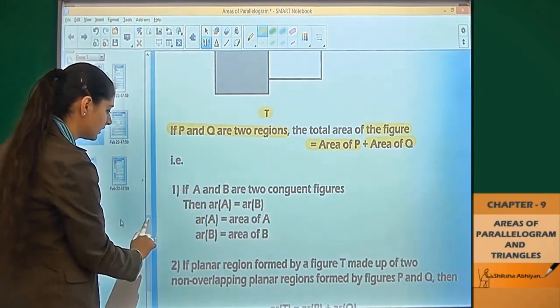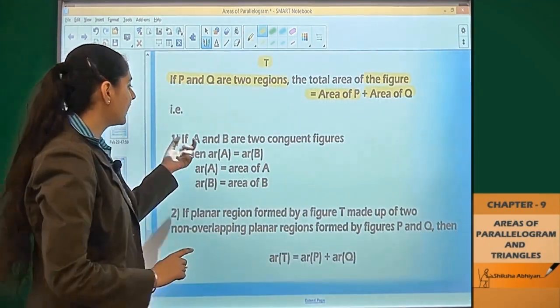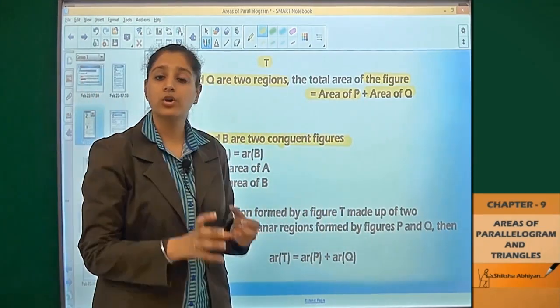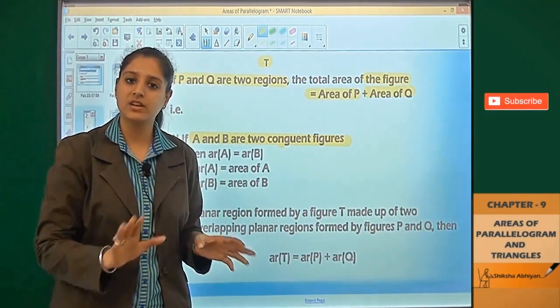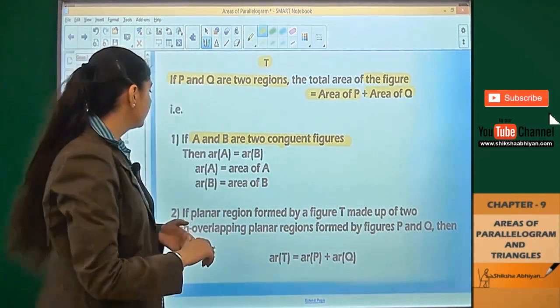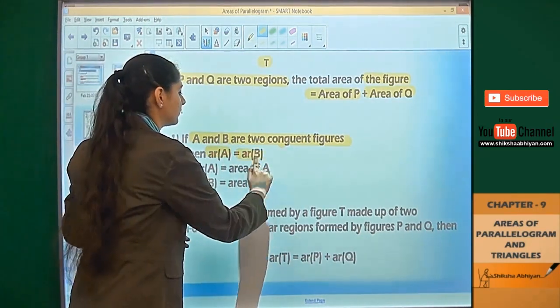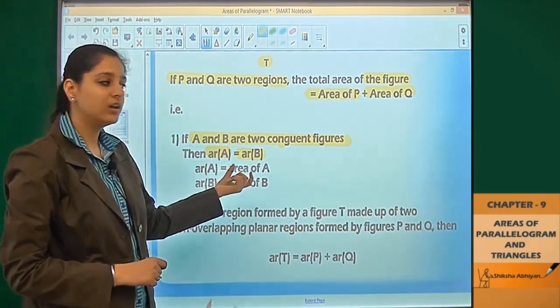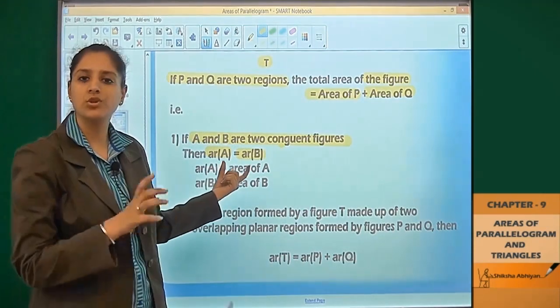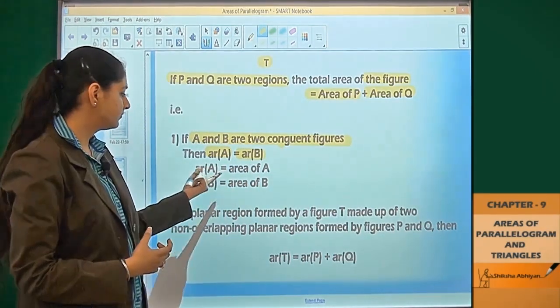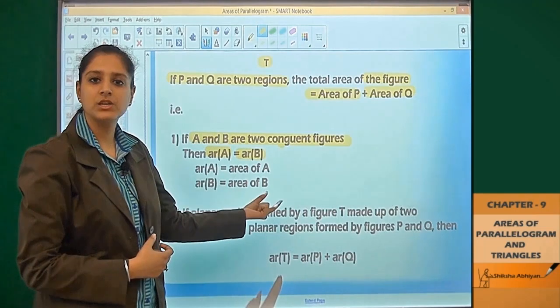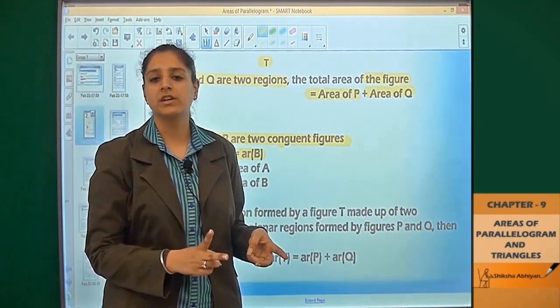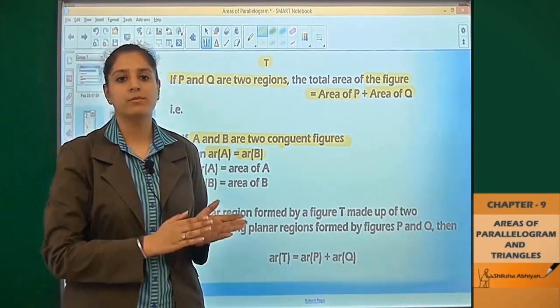First is that if A and B are two congruent figures, then A and B are equal in every respect. This means that area of A will be equal to area of B.